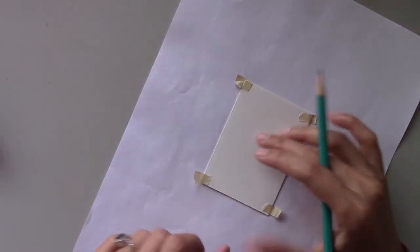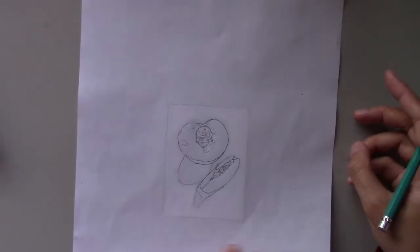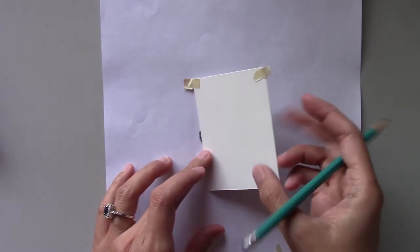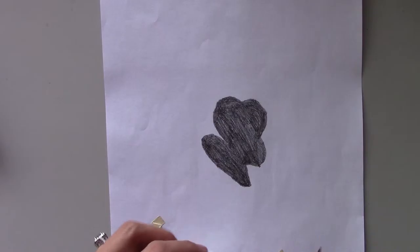Now secure the drawing paper onto the shaded paper with masking tape, turn it over and trace the line drawing. Once you're done, turn the paper over, remove the masking tape and you'll see that the line drawing has transferred onto the paper.